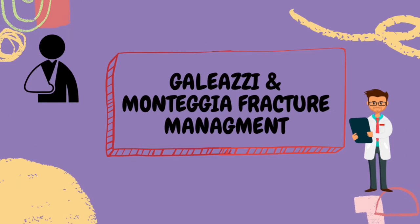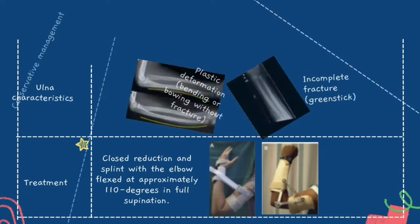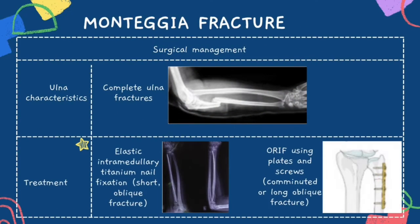Management of Galeazzi and Monteggia fractures is divided into surgical and conservative approaches. For Monteggia fracture in pediatric patients, conservative management applies when the ulna is in plastic deformation or incomplete fracture: treated with closed reduction and splinting with the elbow flexed at approximately 110 degrees in full supination. When the ulna is in complete fracture, it is treated with elastic intramedullary titanium nail fixation for short oblique fractures, and ORIF using plates and screws for comminuted or long oblique fractures.